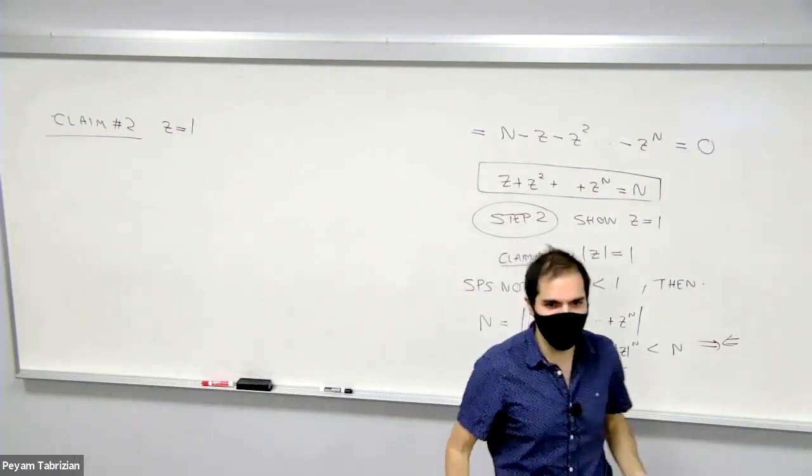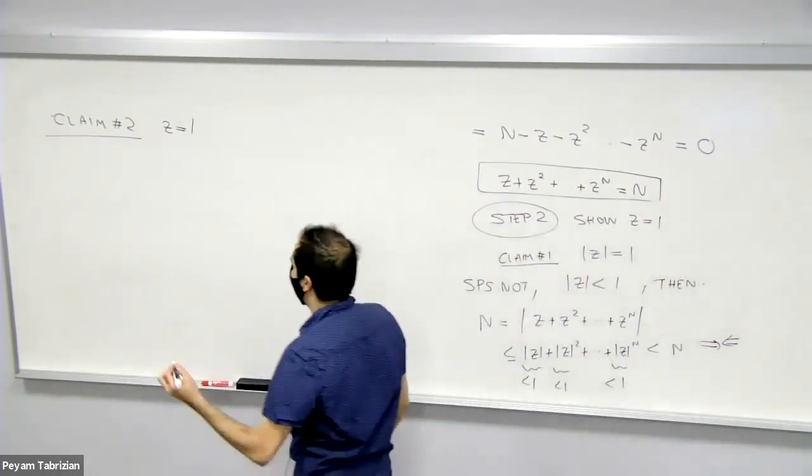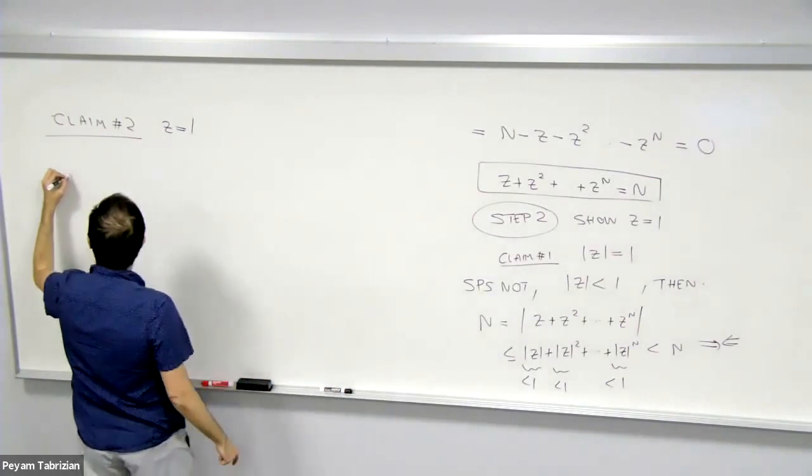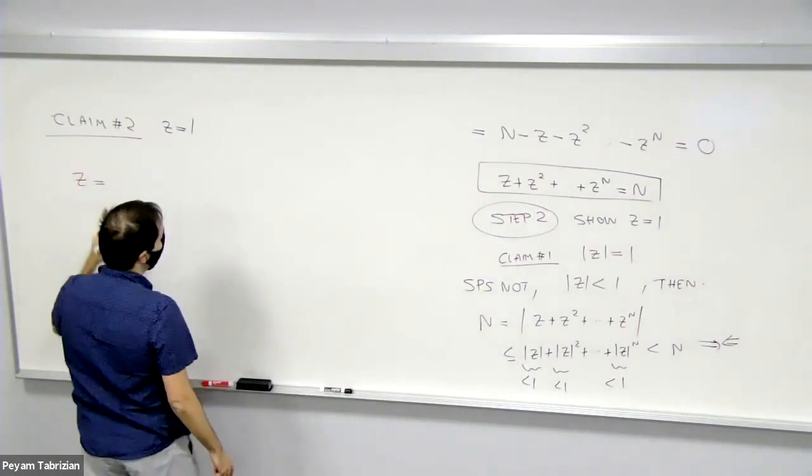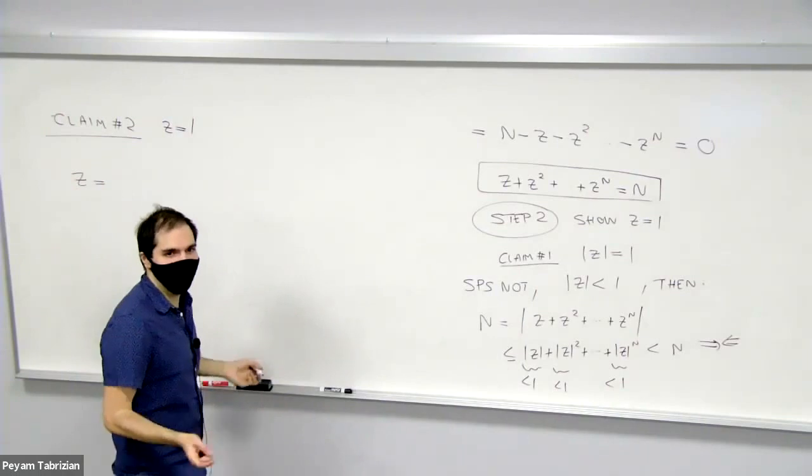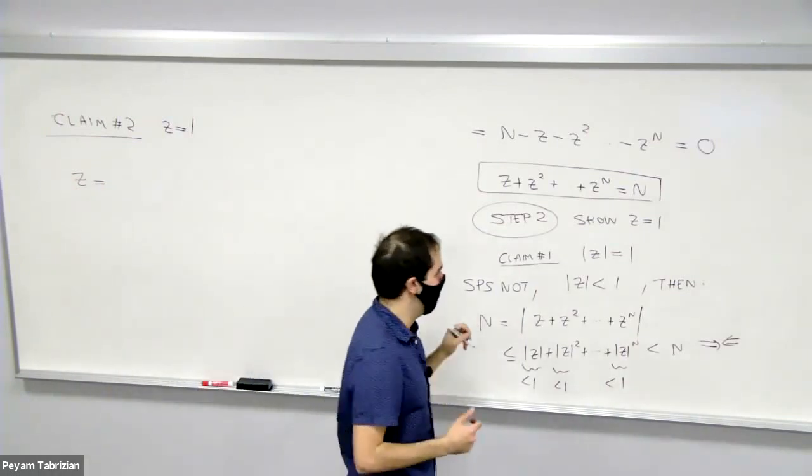Basically, by the exponential form of a complex number, we know that z = re^(iθ) for some r and some θ.